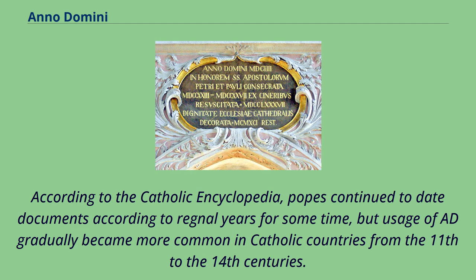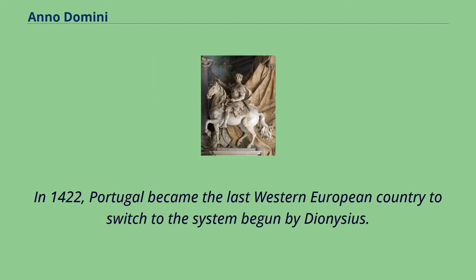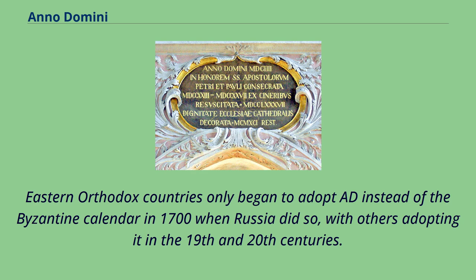According to the Catholic Encyclopedia, popes continued to date documents according to regnal years for some time, but usage of AD gradually became more common in Catholic countries from the 11th through the 14th centuries. In 1422, Portugal became the last Western European country to switch to the system begun by Dionysius. Eastern Orthodox countries only began to adopt AD instead of the Byzantine calendar in 1700 when Russia did so, with others adopting it in the 19th and 20th centuries.